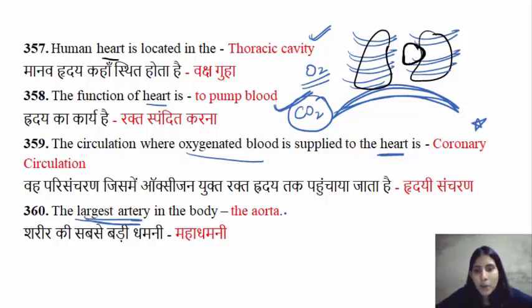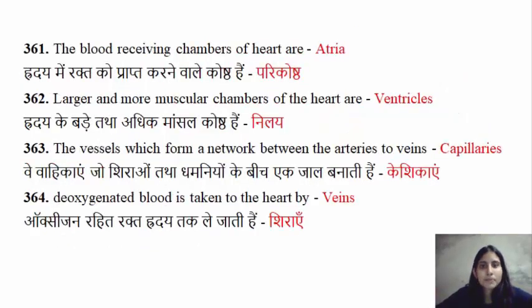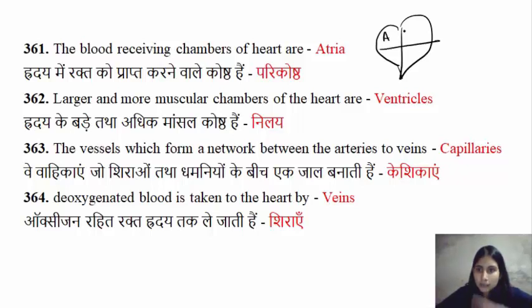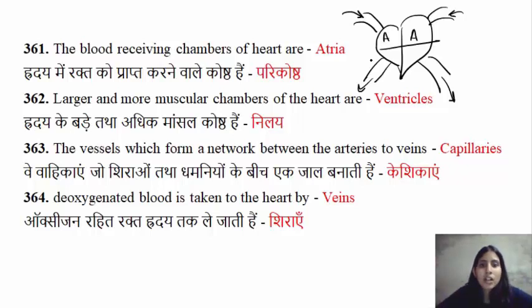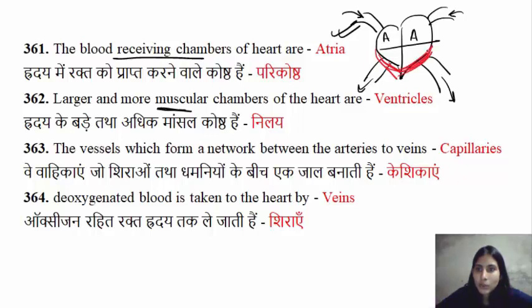The largest artery of the body is the aorta. The heart's blood-receiving chambers are the upper chambers called the atrium. The atria receive blood, while the ventricles pump blood to the entire body. The receiving chambers are the atria.